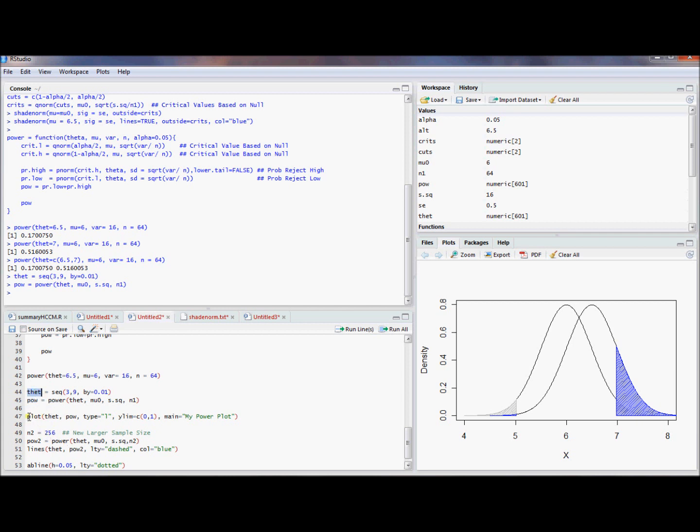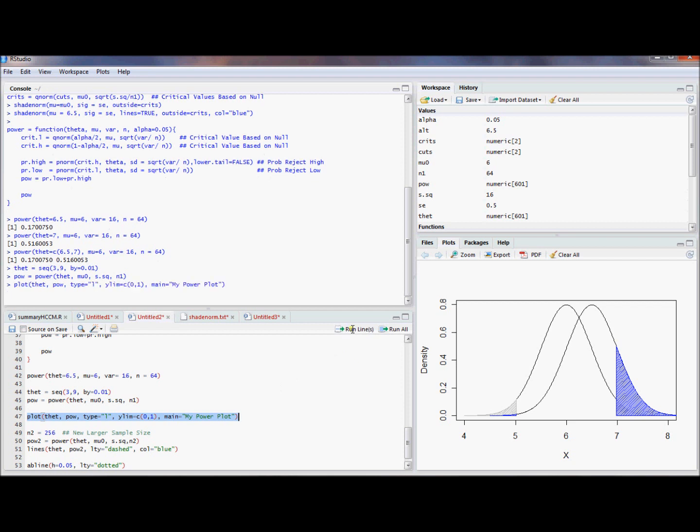So maybe I want to see what this looks like. So I will plot theta versus pow. Use type equals L. And I want to actually make sure the scale is from 0 to 1 on the Y scale. So that's using the ylim command. And I'll put a label on it, call it my power plot. So there you have a power plot.